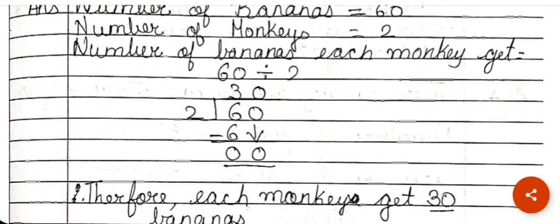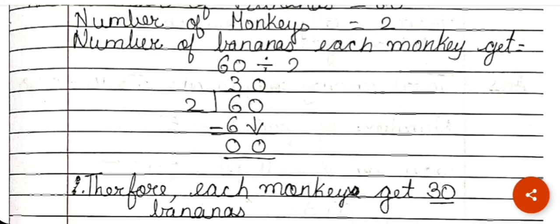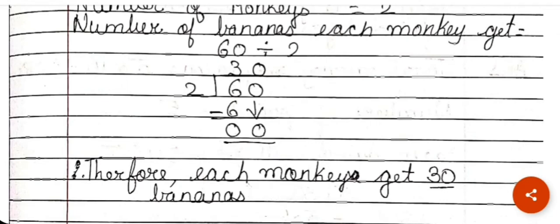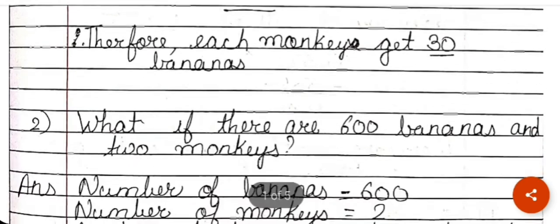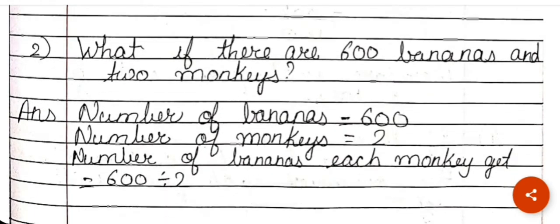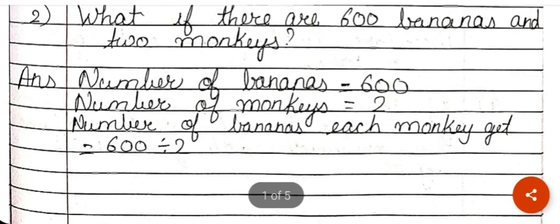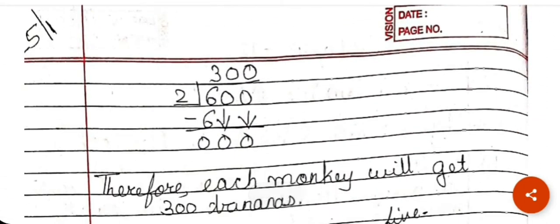I always look at my first digit, which is 6. Is 6 smaller or bigger than 2? It is bigger, so it can be divided. I check the 2-times table: 2×1=2, 2×2=4, 2×3=6. So I write 3 and subtract 6. 6 minus 6 is 0. I bring down the 0, and since 0 cannot be divided, therefore each monkey gets 30 bananas.